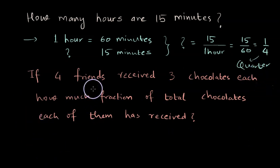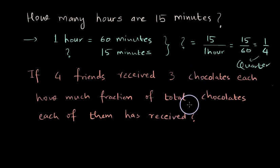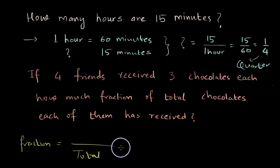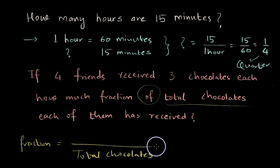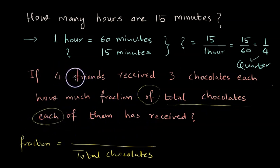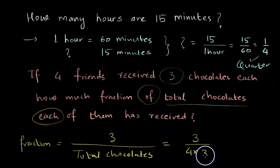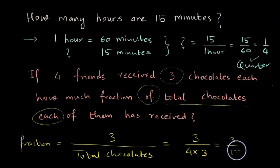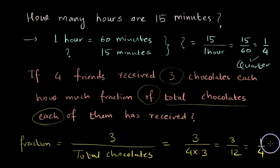If 4 friends each received 3 chocolates, what fraction of the total chocolates did each of them receive? Spotting the word 'of' tells us total chocolates go in the denominator. Each friend received 3 chocolates, so the numerator is 3. Total chocolates are 4 times 3, which equals 12. So the fraction is 3 over 12, which simplifies to 1/4 by dividing numerator and denominator by 3.